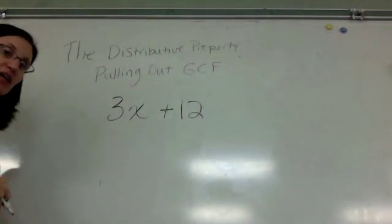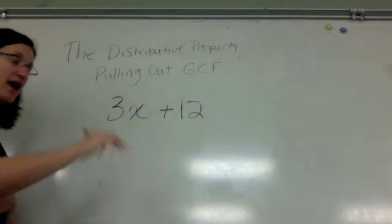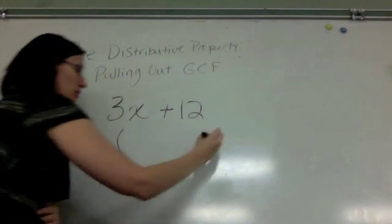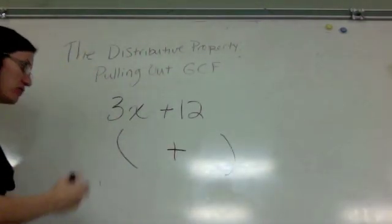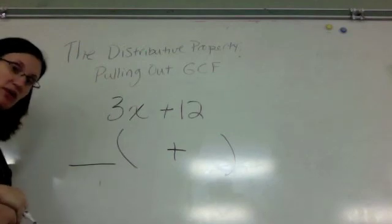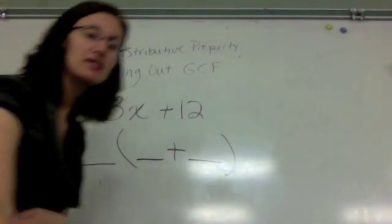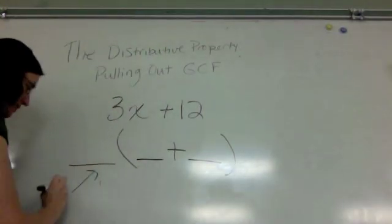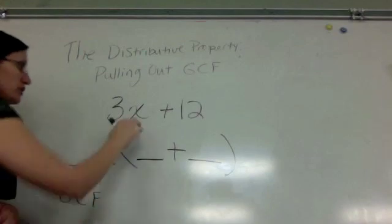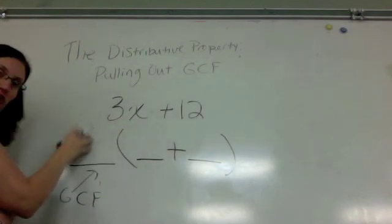3x plus 12. Now, from working with the rainbow property, you know that there really has to be three things. You need your parentheses, and there's going to be a plus sign for sure. You know that you need a number outside of the parentheses, and there will be two inside of the parentheses. The number outside of the parentheses is going to be your greatest common factor. So you're going to pull out the greatest common factor between 3x and 12, and that's going to go here.